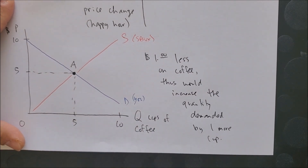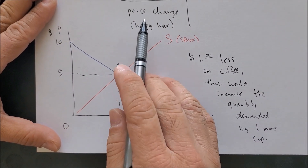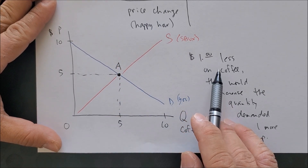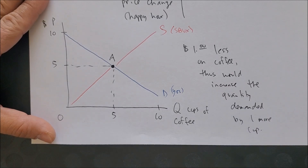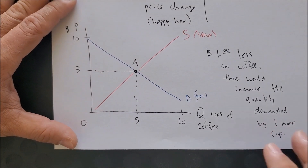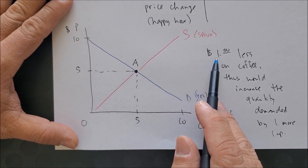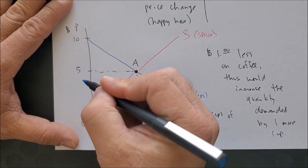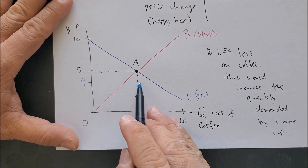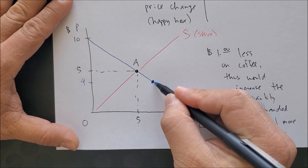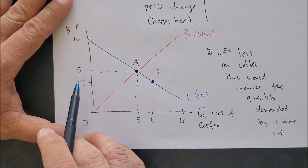Now we want to illustrate how happy hour impacts our graph. There is a price change of one dollar less, so you the consumer will consume one more cup of coffee. At point A the price is five dollars, and because of happy hour it is one dollar less — five minus one equals four dollars — and at four dollars you want to consume one more cup.